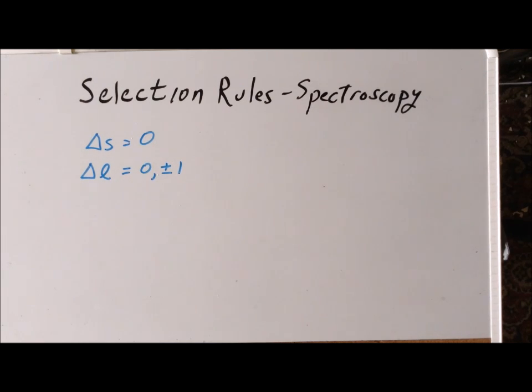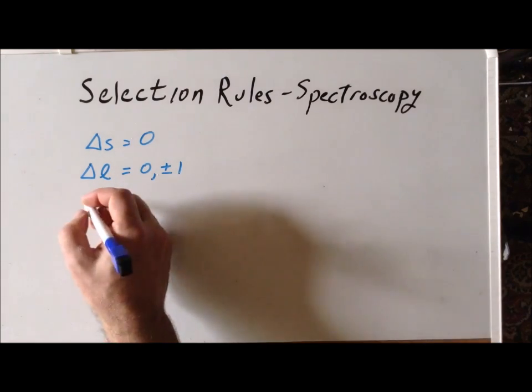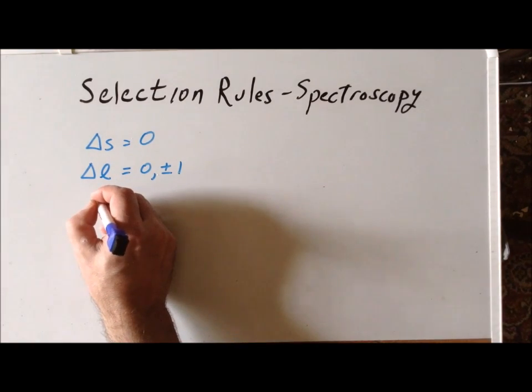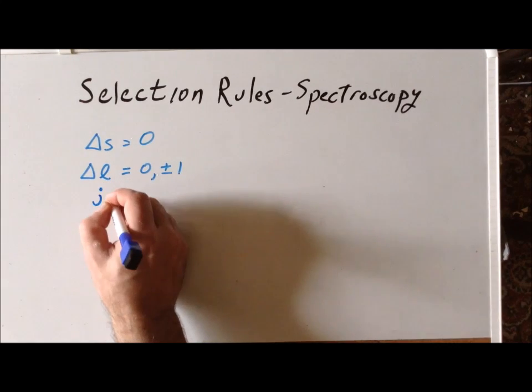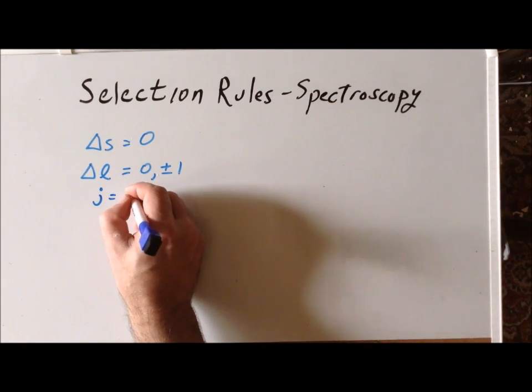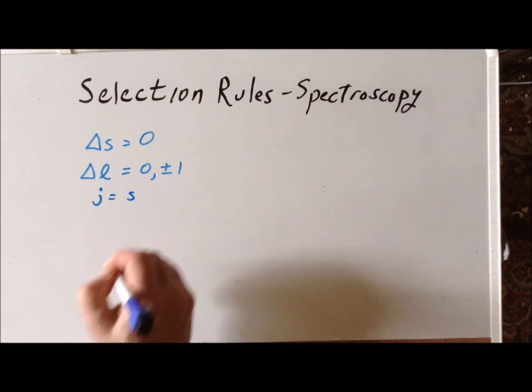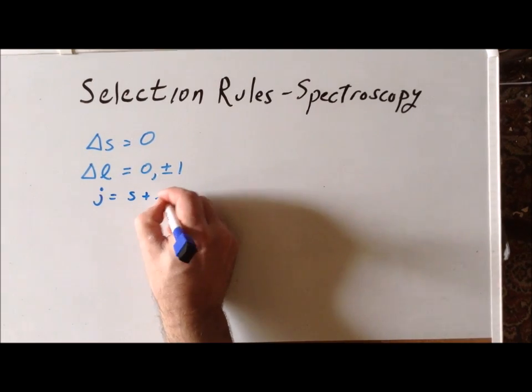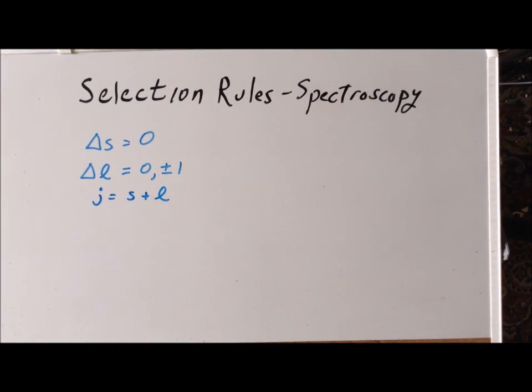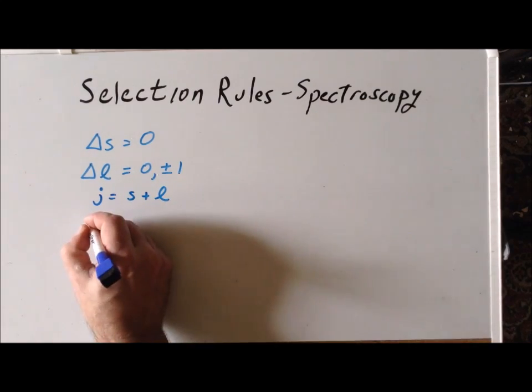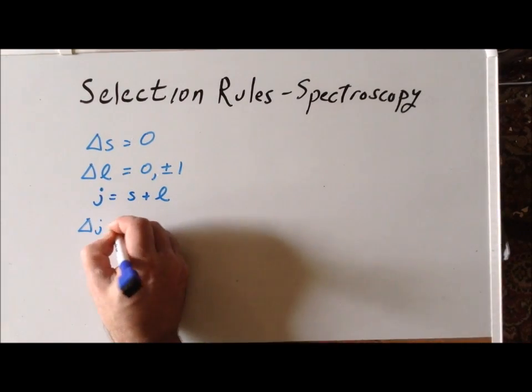The last of the important quantum numbers that we want to look at is one called J. And J is the spin orbit coupling. It's the interaction between the spin angular momentum and the orbital angular momentum. And we have selection rules for J, just as well. The change in J. This rule looks very similar to the rule for L.